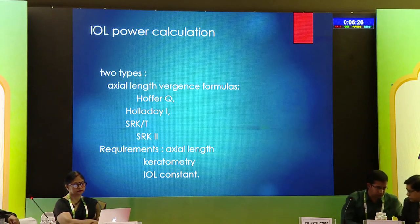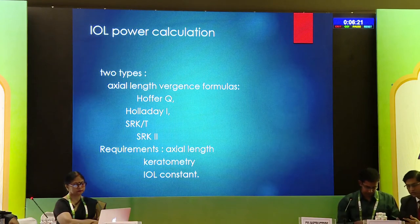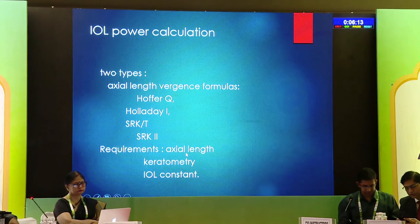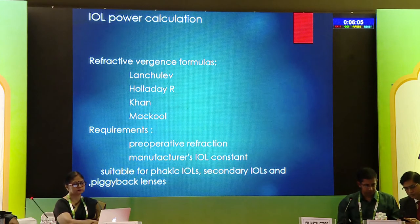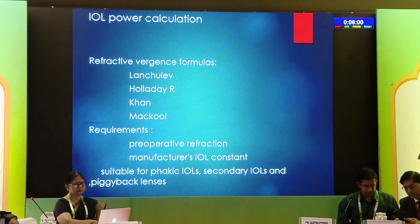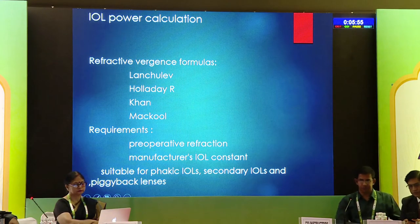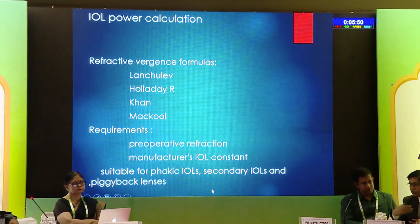IOL power can be calculated based on axial length using the vergence formula, or based on refractive error using the vergence formula. The Barrett-2 is now giving more or less accurate results, but it requires axial length, keratometry, and the IOL constants. The refractive vergence formula is mainly dependent on preoperative refraction and the manufacturer's IOL constant. It is very useful for calculation of IOL power in secondary implants and piggyback lenses.